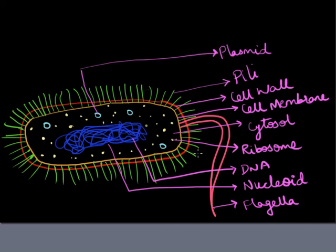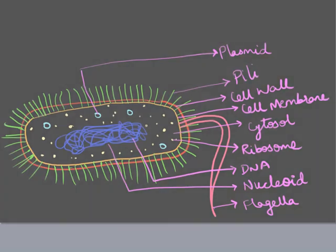It's fully covered with the pili. There is a flagellum on one end, the nucleoid region containing the DNA, plasmids, the ribosomes, cell wall, and the cell membrane. So you have now learned how to draw a bacterial cell.